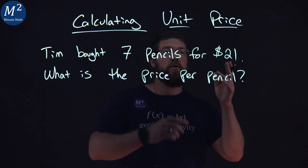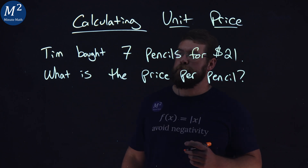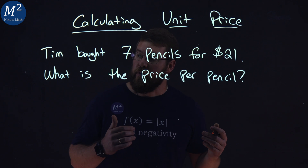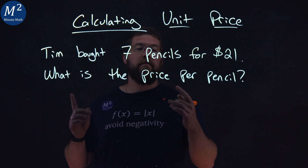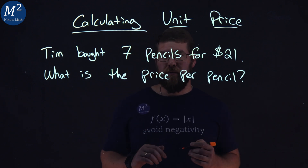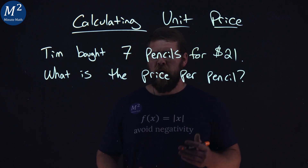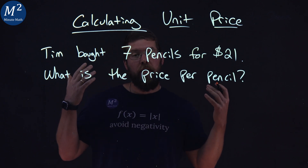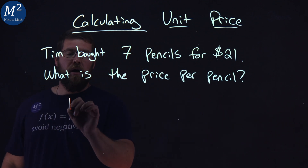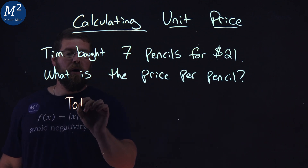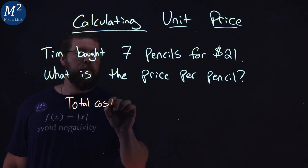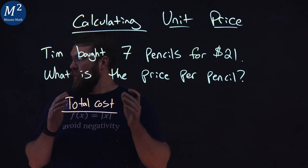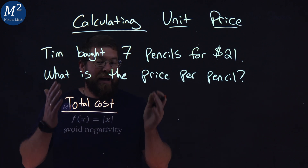Let's learn about calculating unit price. Tim bought seven pencils for $21. What is the price per pencil? Well, to find our unit price — the price per pencil — we want to take our total cost and divide that by the number of pencils.